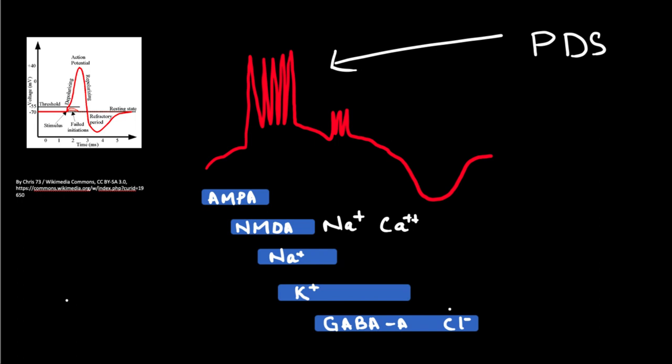The efflux of potassium and the entry of chloride inside the neuron leads to the hyperpolarization period at the end of the paroxysmal depolarization shift. A single PDS would not lead to an epileptic spike. There are two things essential to produce an epileptic spike: hyperexcitability, manifesting as a PDS, and hypersynchronous discharge — meaning hundreds and thousands of these PDSs have to occur at the same time.